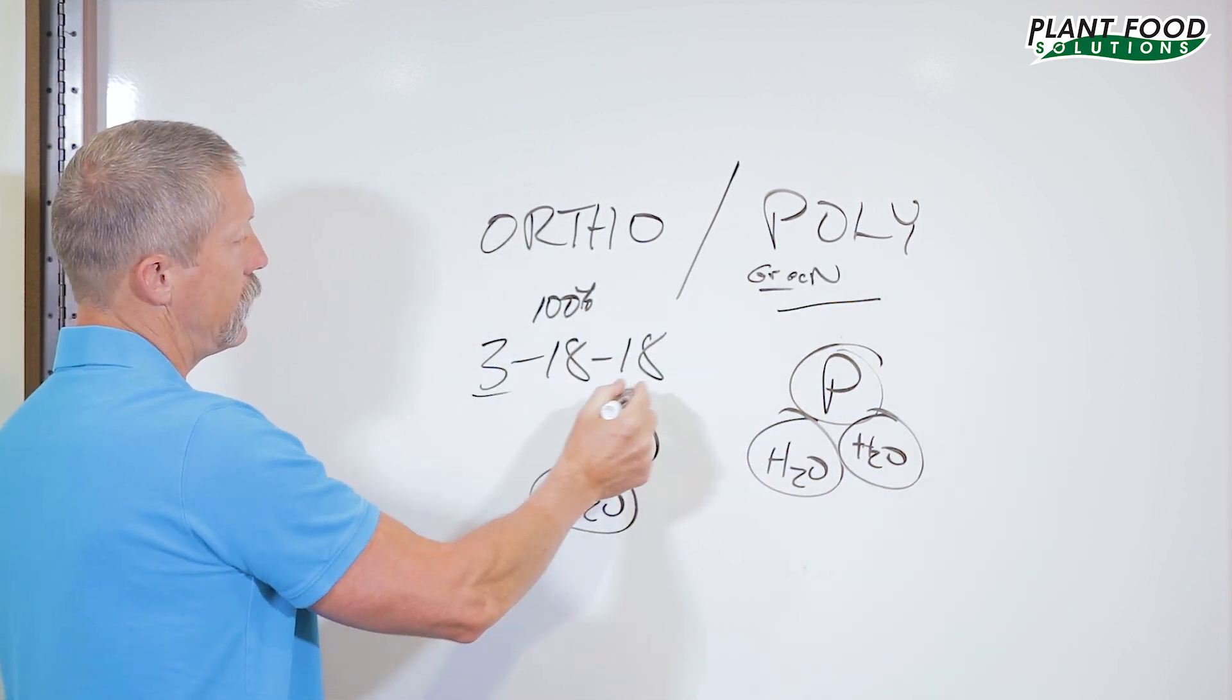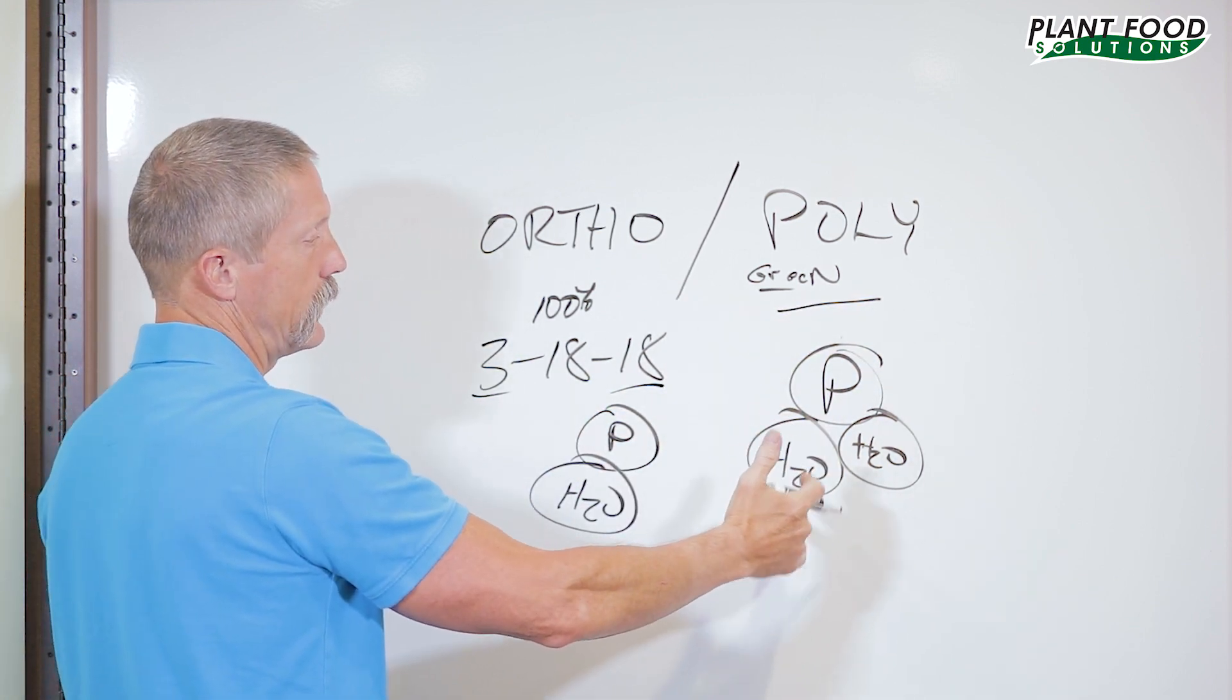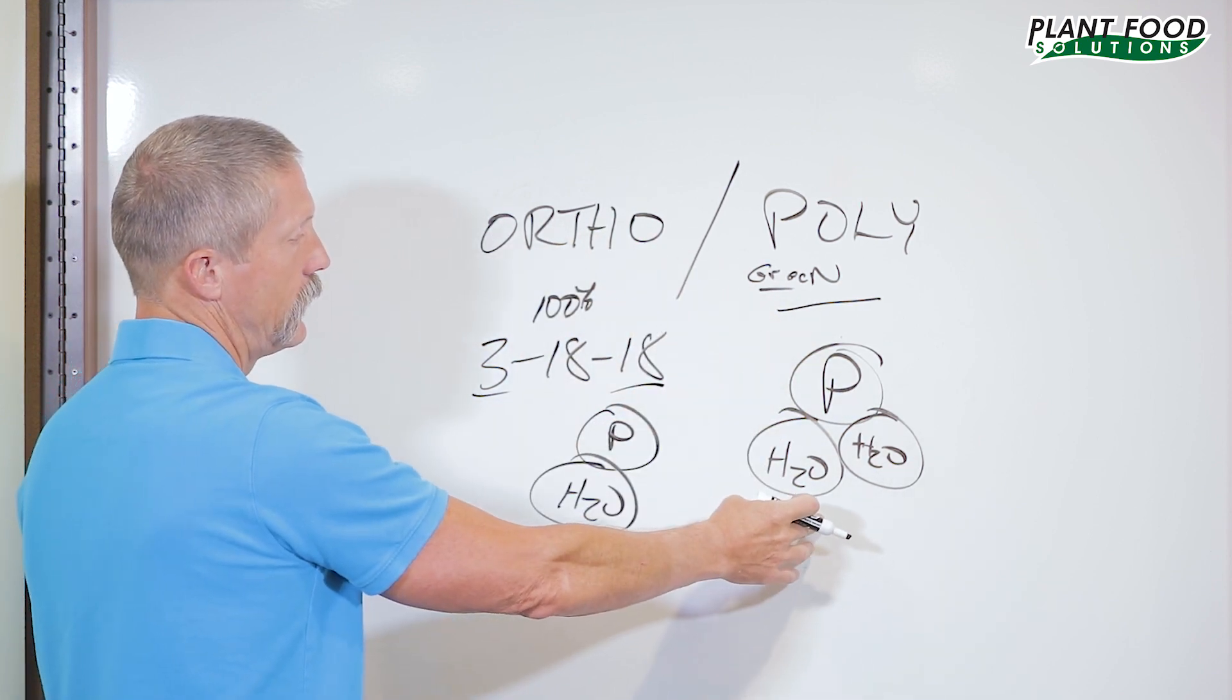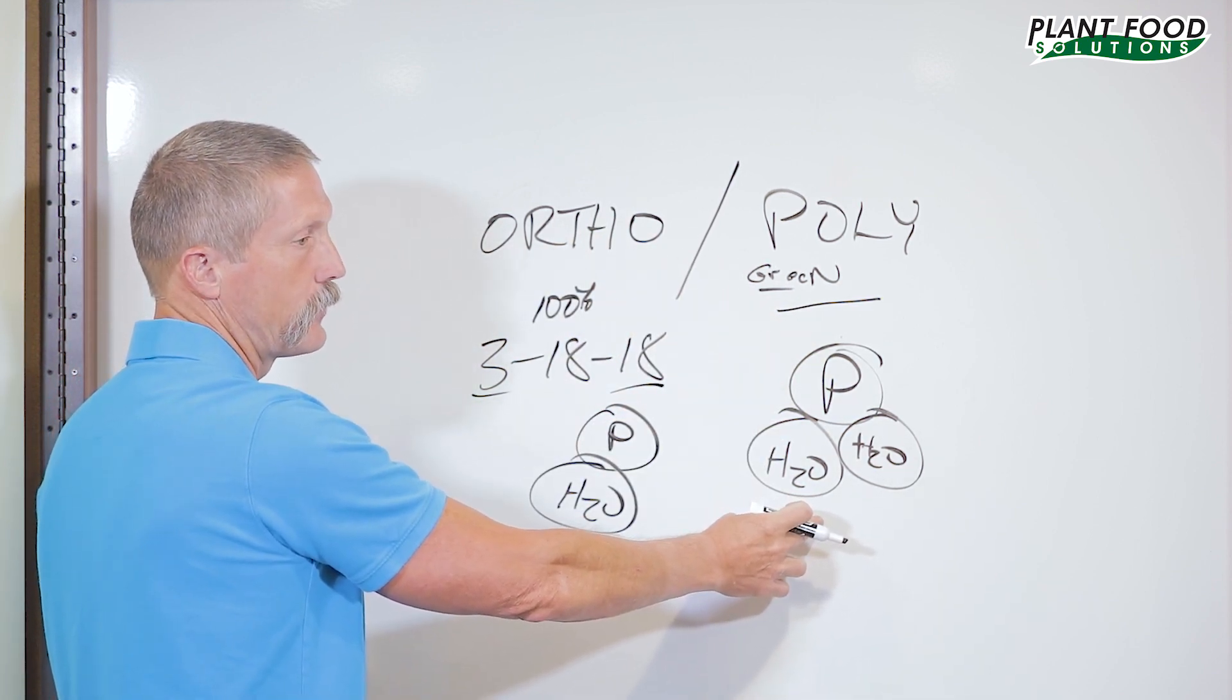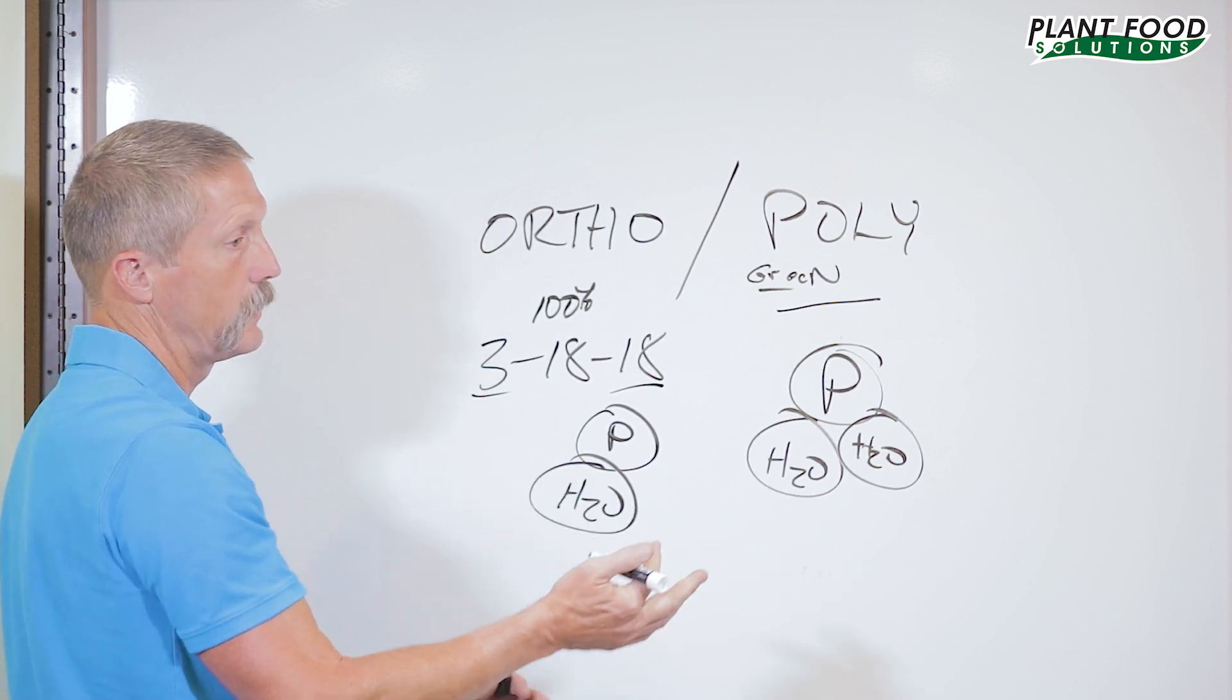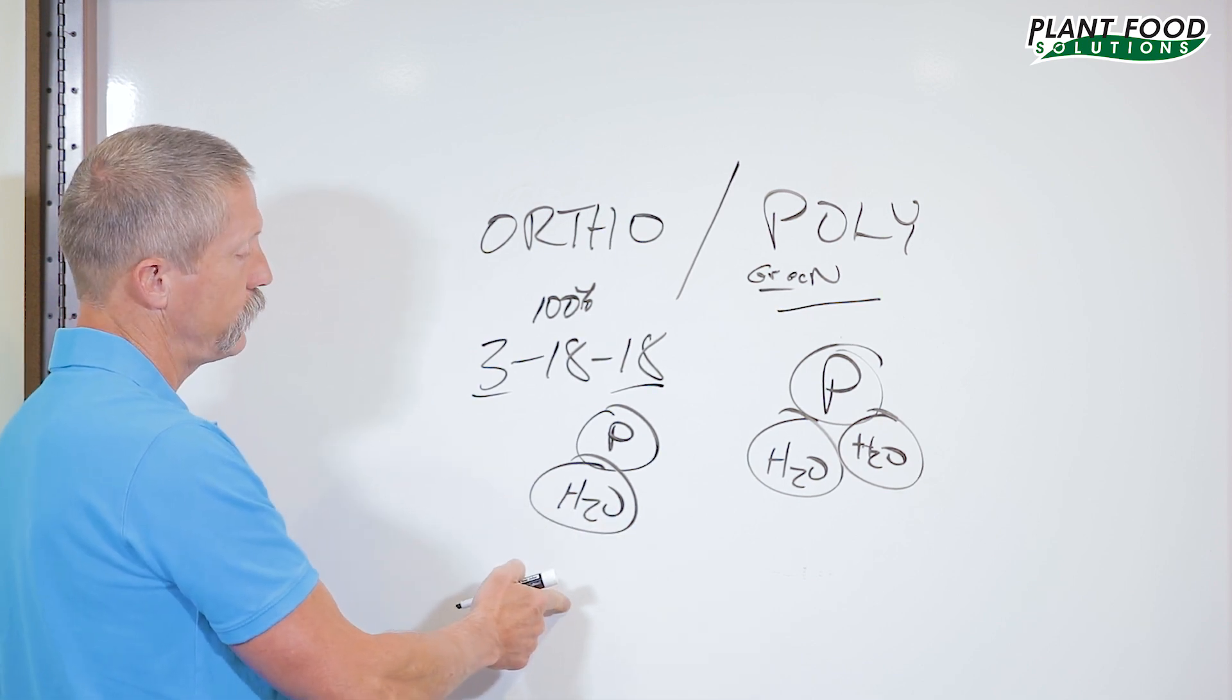But once it's introduced with nitrogen potash, then this poly is much harder to break down. So it gets to where this poly gets harder and harder for the plant to get to. It is slow release because it's normally so slow, the plant's never going to get to it. That's why we prefer the orthophosphate.